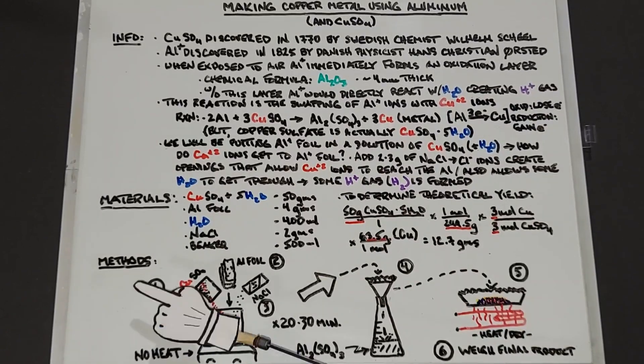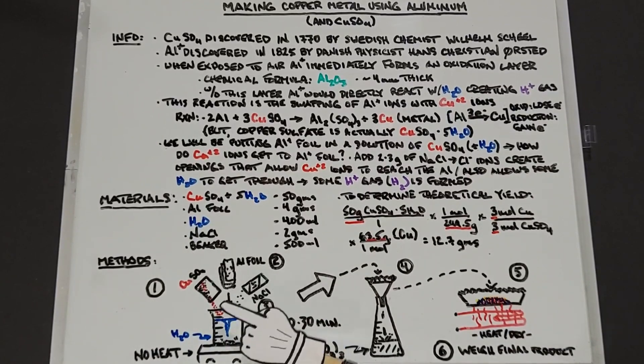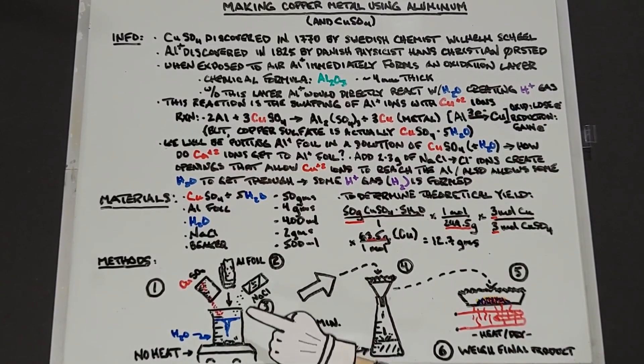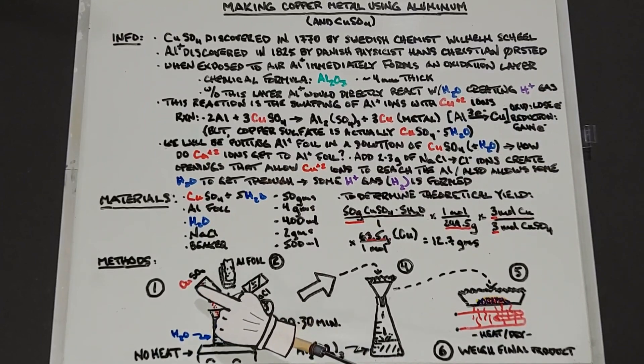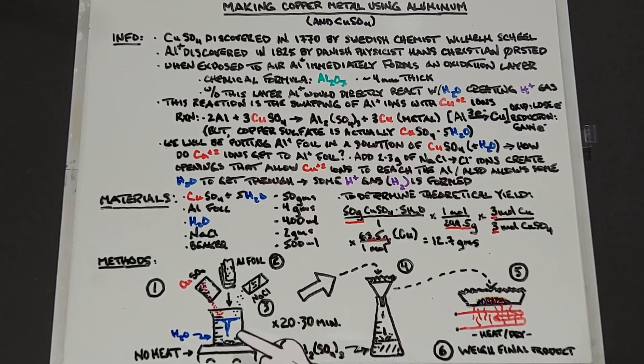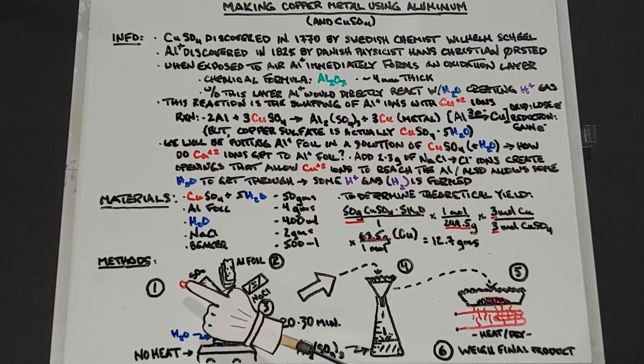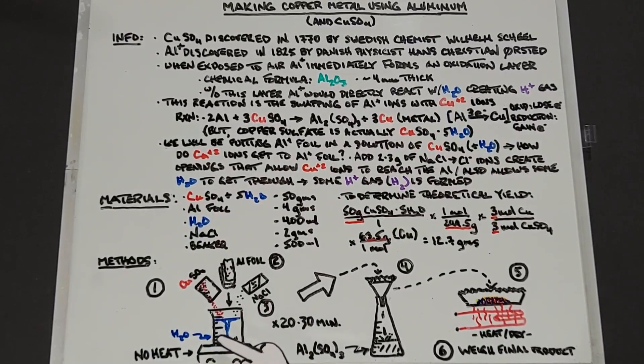Finally onto our methods. We'll have our 500 milliliter beaker with 400 milliliters of distilled water in it. I am going to use a magnetic stirrer but no heat, because this reaction is exothermic. First we're going to add our copper sulfate, 50 grams. Mix it until it dissolves. It takes some time because this copper sulfate has five waters attached to each one.